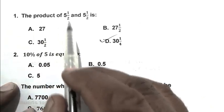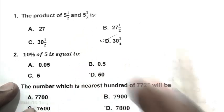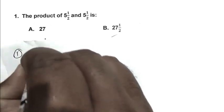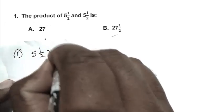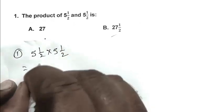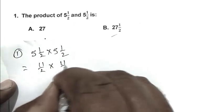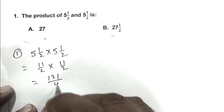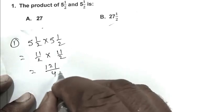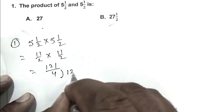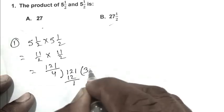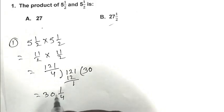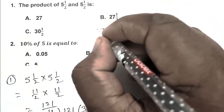Question number 1: The product of 5½ and 5½ is? So first we write the number 5½ and 5½. So 11 by 2, that is 11 by 2, we multiply it, it becomes 121 by 4. We convert it into fraction, it becomes 30 and 1/4. So D is the right answer.